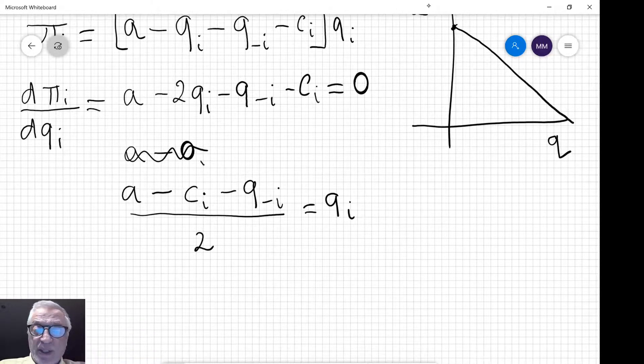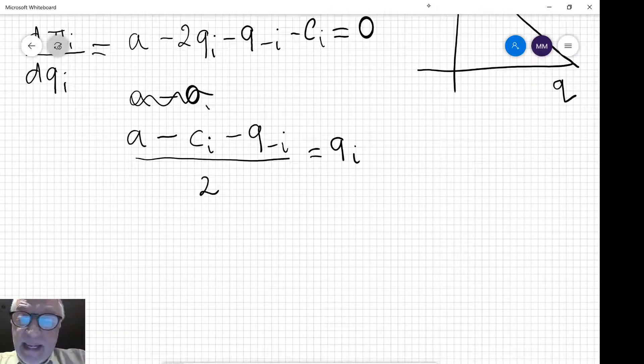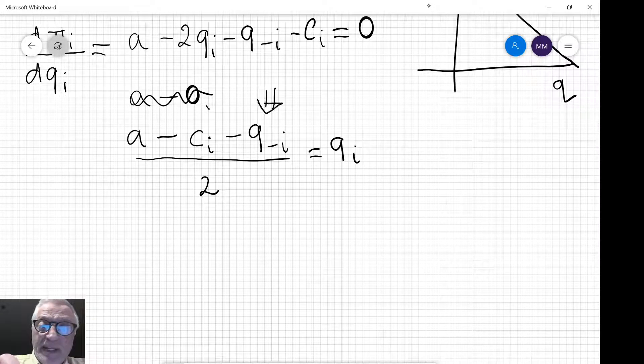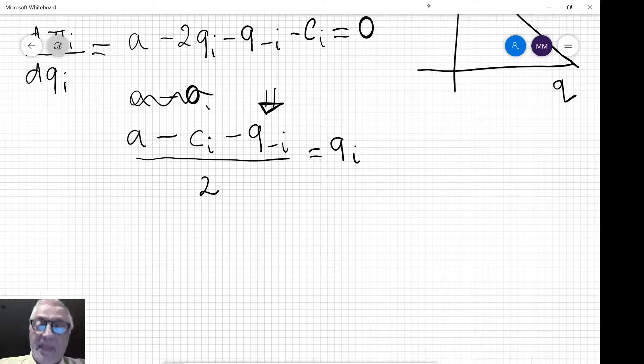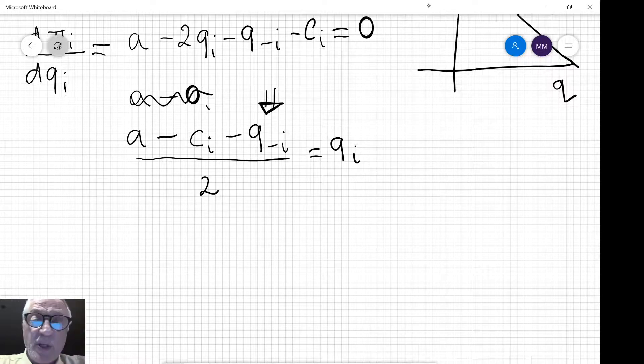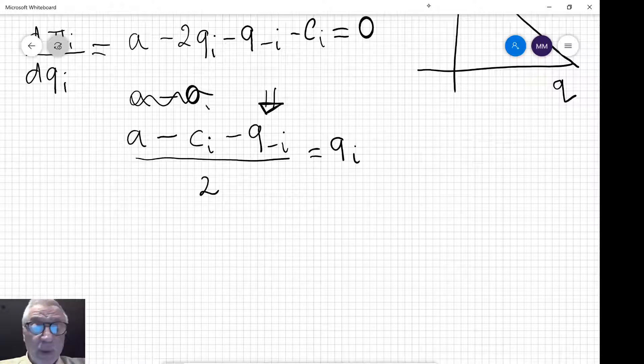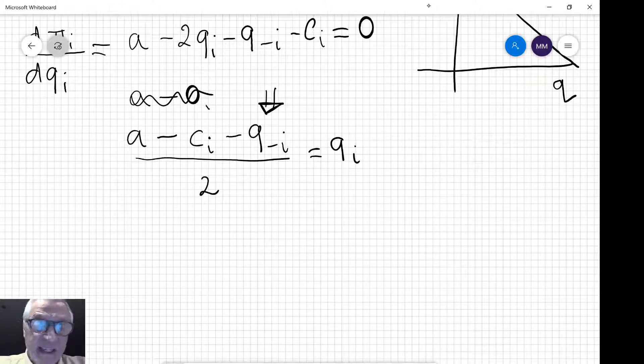That of course is not our solution; it's simply the best response if firm I knew how much everybody else was producing. But what we do know is that the same problem will be faced by every other firm, so let's do this now for firm J.